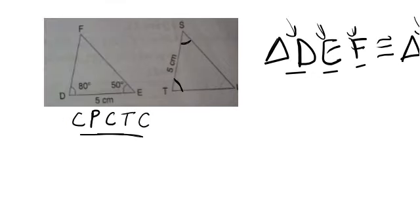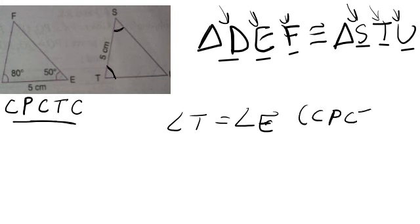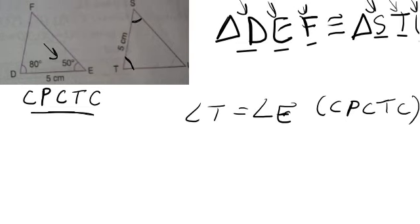So we have to find for S and T. See here that angle T equals to angle E. The reason will be corresponding parts of congruent triangles are congruent or equal, CPCTC. So angle E measures what? Angle E measures 50 degrees. Now we have to find, so angle T will be also 50 degrees. Angle T therefore equals to 50 degrees. This will be one.